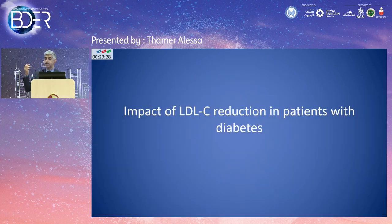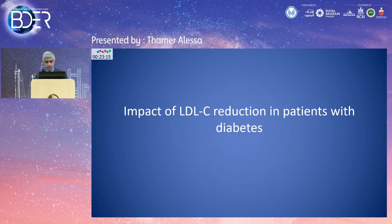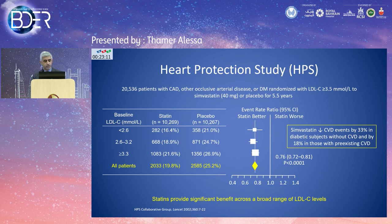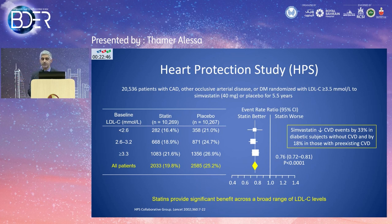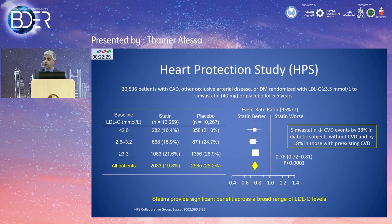Does statin therapy work the same in patients with diabetes, given their considerably increased cardiovascular risk? The first insight came from the HPS trial, published in 2002, which randomized a large number of patients with coronary heart disease — about 30% had diabetes. Patients received simvastatin 40 mg versus placebo and were followed for about five years. Cardiovascular disease events were reduced by 33% in diabetic subjects without prior cardiovascular disease, and by 18% in those with pre-existing cardiovascular disease.